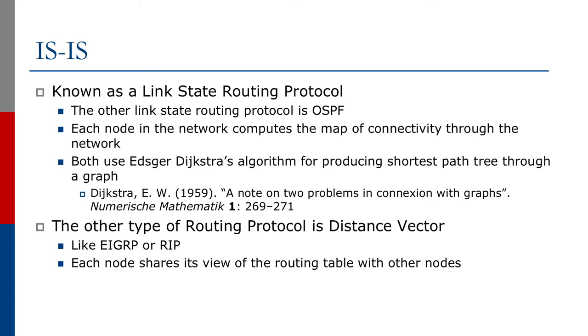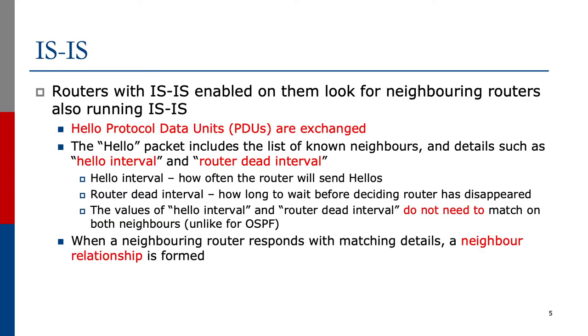The common distance vector protocols are EIGRP, which is exclusive to Cisco, and RIP, where each node shares its view of the routing table with other nodes in the network.